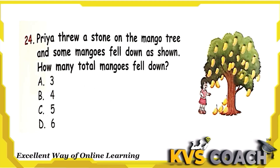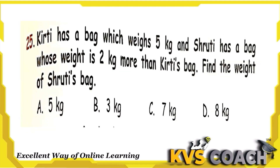The next question: Priya threw a stone on the mango tree and some mangoes fell down as shown in the picture. How many total mangoes fell down? Counting: 1, 2, 3, 4. Four mangoes fell down. Option B is the right answer.